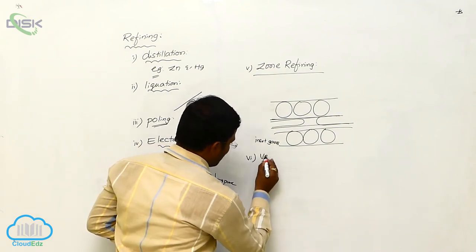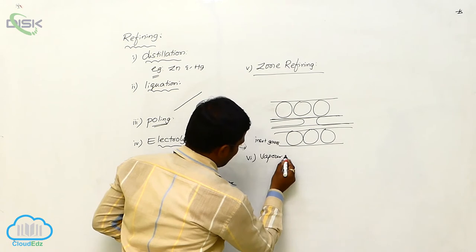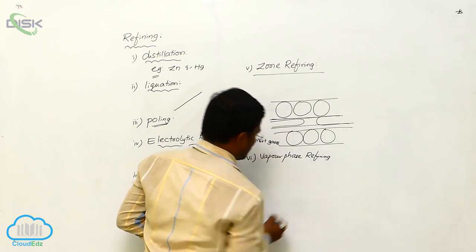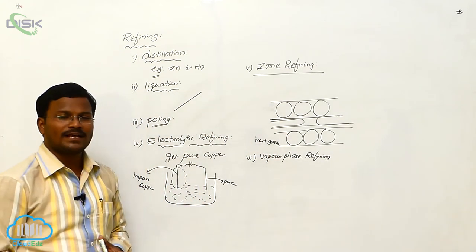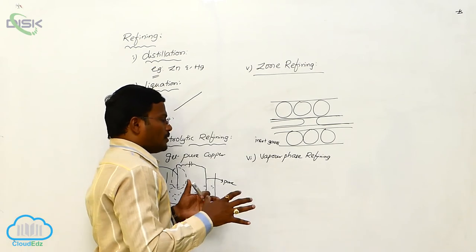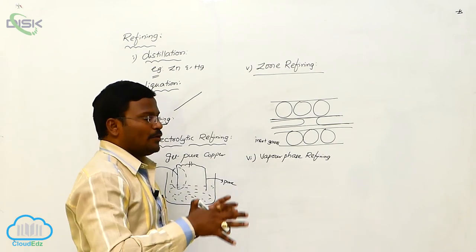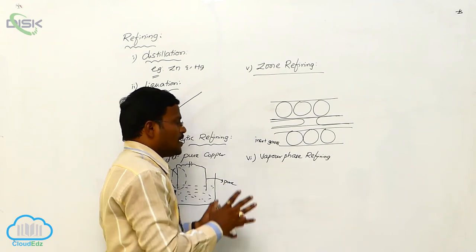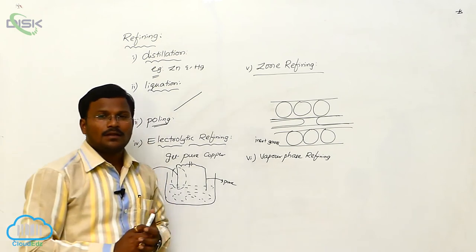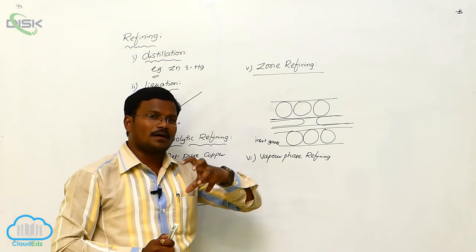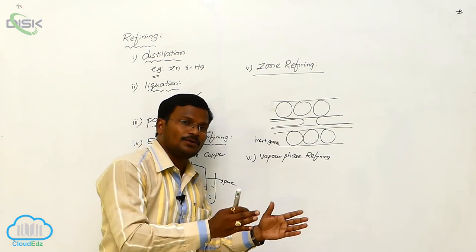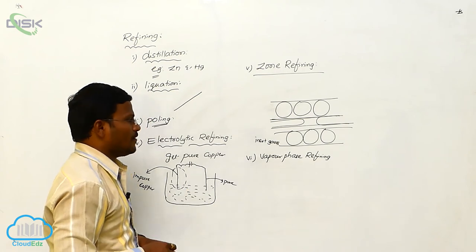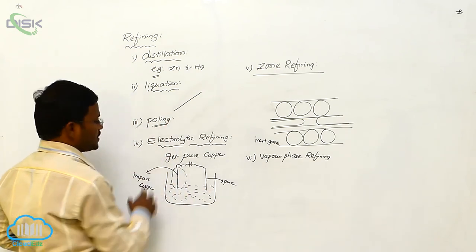The last method is vapour phase refining. In vapour phase refining, the metals with their impurities are heated in specified equipment under special circumstances. During this process, the pure vapours of the metals are collected, which are then converted into liquids followed by solids. This type of purification is called vapour phase refining.